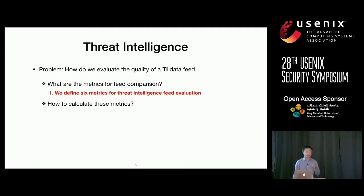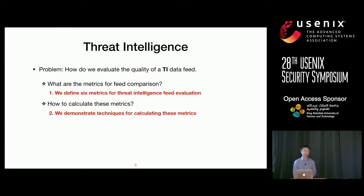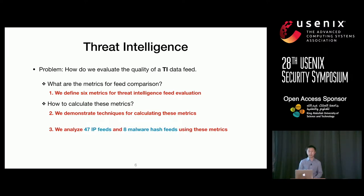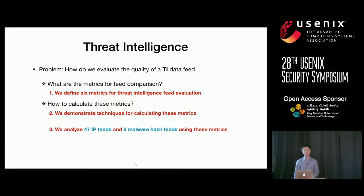We define six basic threat intelligence metrics for fair evaluation and demonstrate techniques to calculate them. We further collect a broad set of threat intelligence data and analyze 47 IP feeds and eight malware hash feeds using these metrics, trying to answer: can we make a reasonable decision about which product to choose?